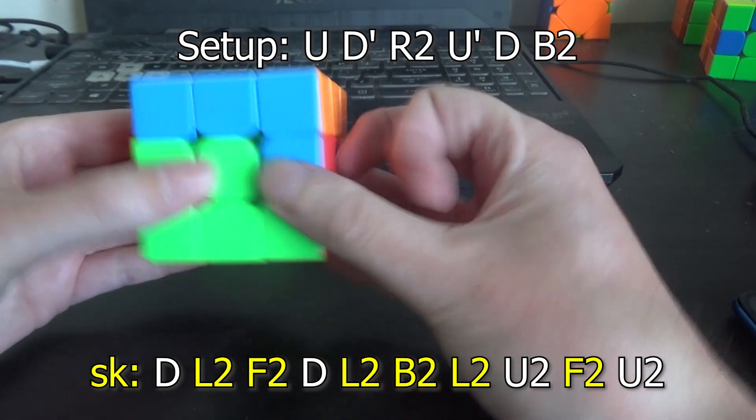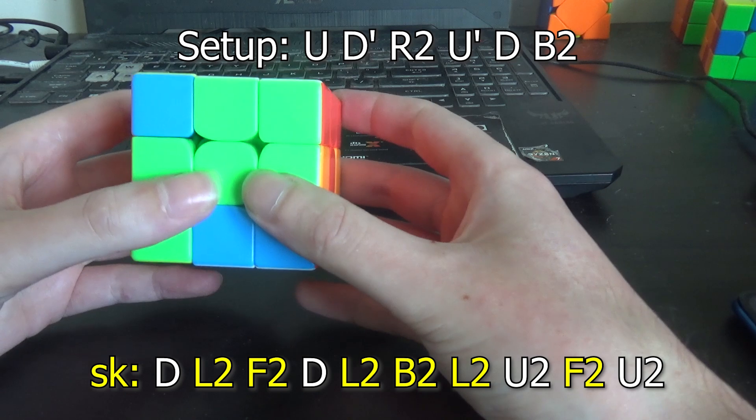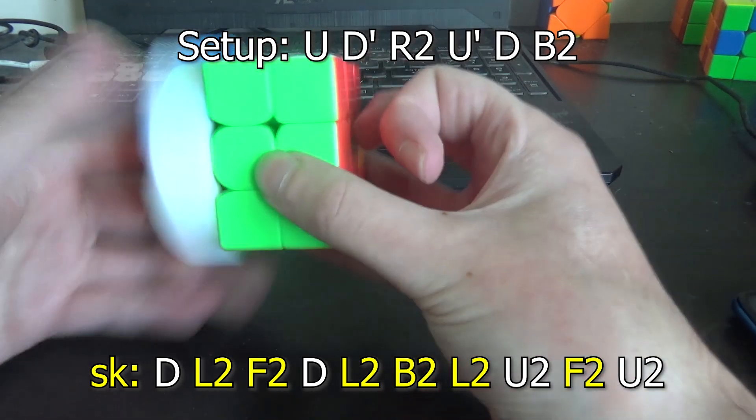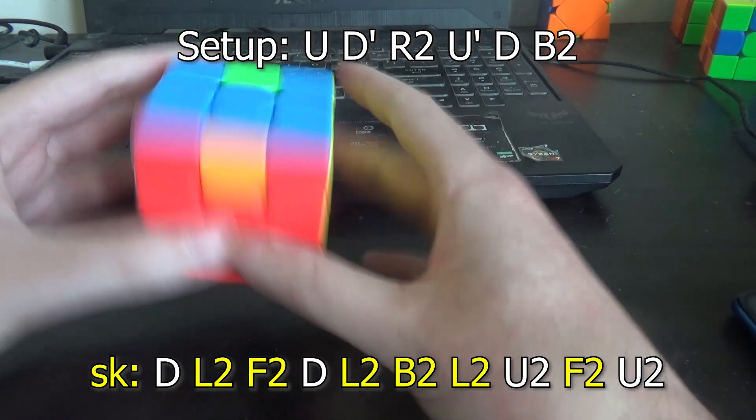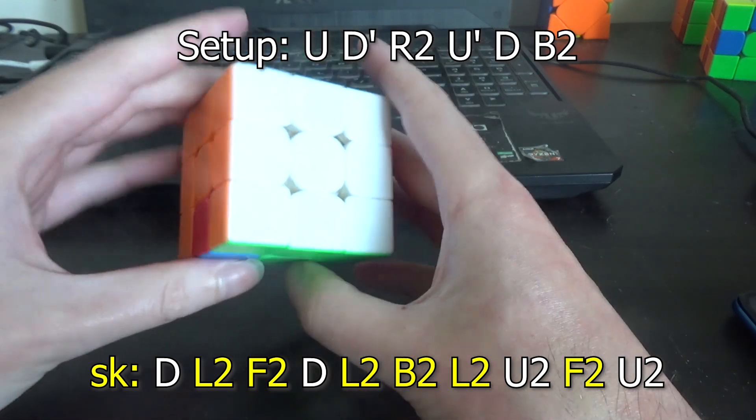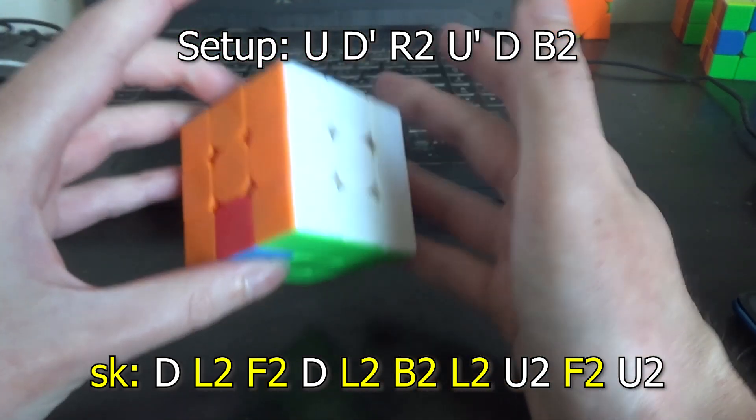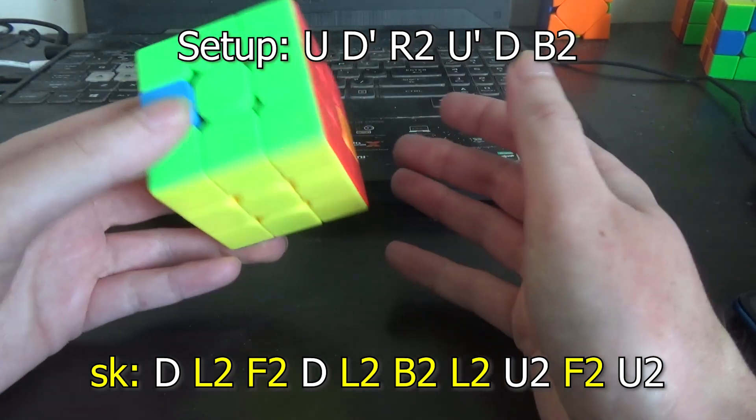So we'll undo the U2F2U2L2 and then do another U2F2U2L2. That's 8-8 but it does not solve the case unfortunately. And I knew that was going to happen based off just knowing what the algorithm does, but you can just guess and check.